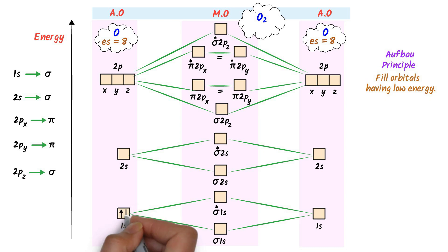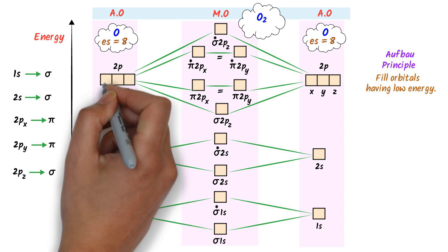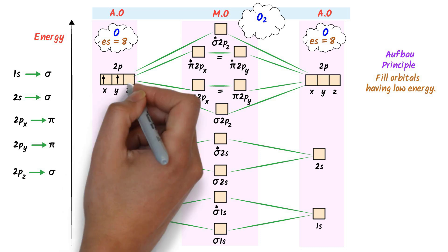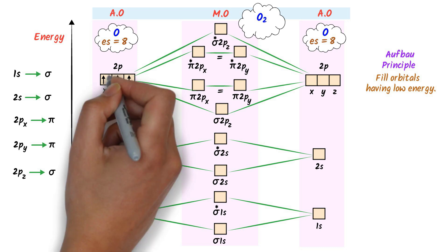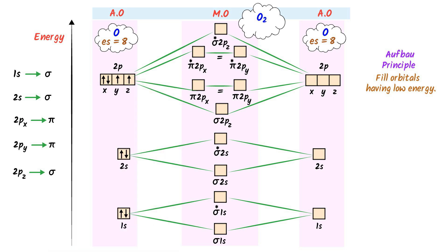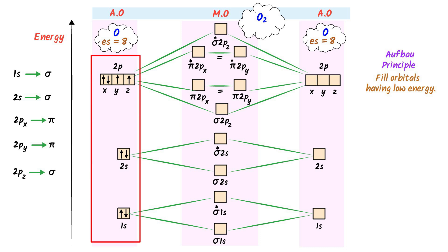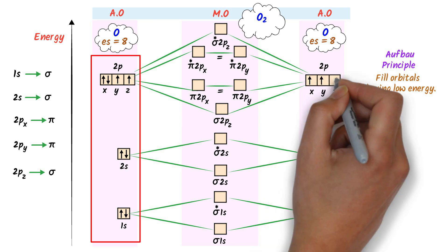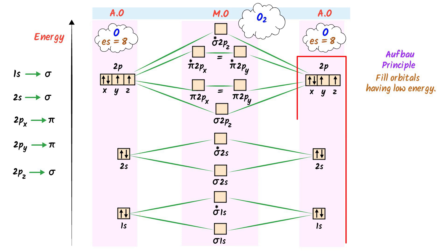I put 2 electrons in 1s, 2 electrons in 2s, and 1 electron in 2px, 1 electron in 2py, 1 electron in 2pz, and 1 electron in 2px. This is the electronic configuration of this atomic orbital. I copy this electronic configuration from the left hand side and write it at the right hand side for the second oxygen atom.